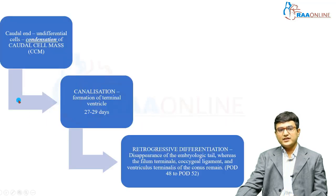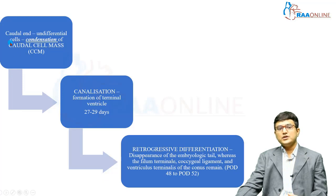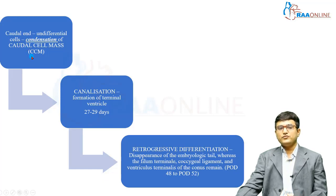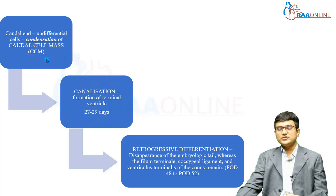So what is secondary neurulation? The caudal end of the spinal cord has yet to develop once primary neurulation is complete. The undifferentiated cells at the caudal end condense to form what is called a caudal cell mass. This is the first step and the start of secondary neurulation, occurring around 28 days post ovulation.